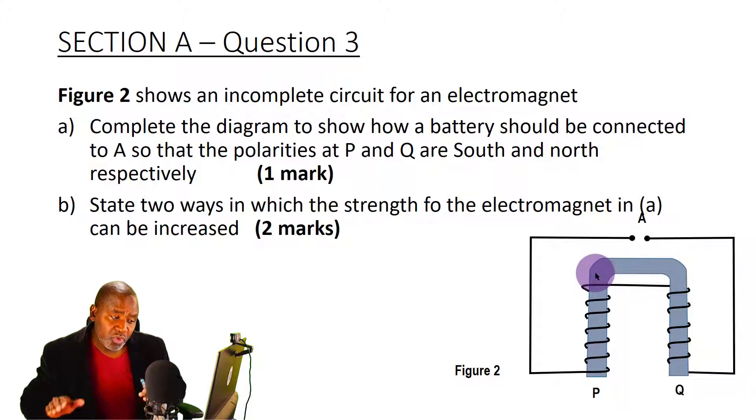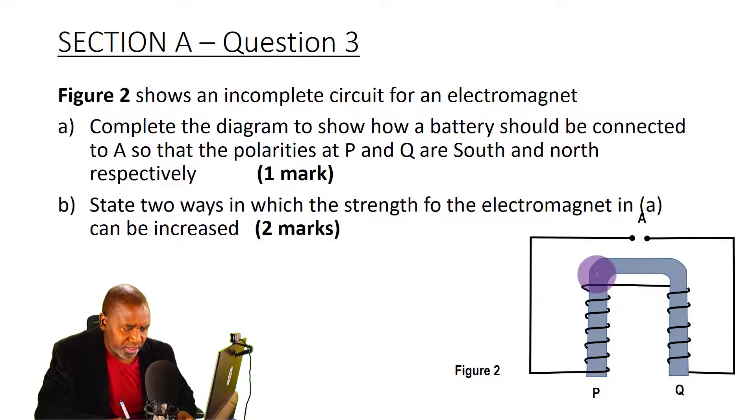So I'm going to hold that coil like this with that part up there being the north pole. And I can be able to see that according to my fingers, the way my fingers point, they point in this direction. Since this side must be a north pole, then according to the way I have held my hands my fingers have pointed in this direction.